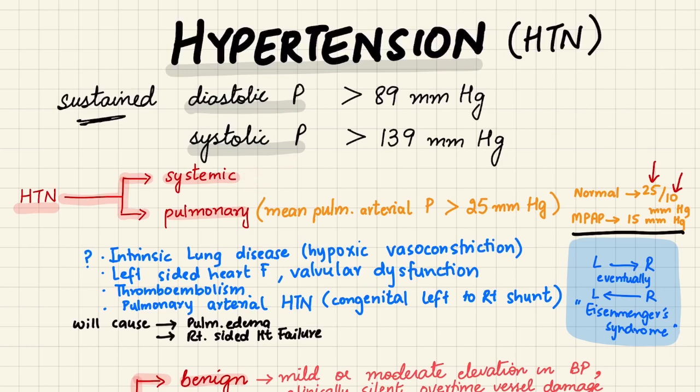Pulmonary hypertension is another disease which is due to intrinsic lung disease, left-sided heart failure, thromboembolism, or pulmonary arterial hypertension — which is actually a congenital defect involving a left-to-right shunt in the heart that eventually reverses to a right-to-left shunt and causes Eisenmenger's syndrome. Pulmonary hypertension will cause pulmonary edema and right-sided heart failure.